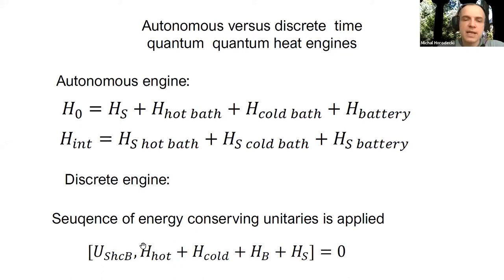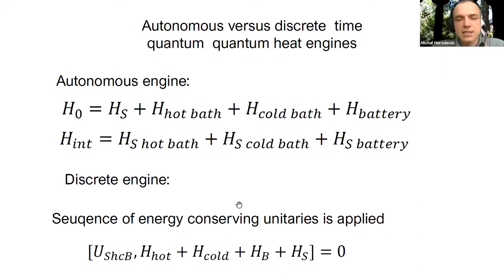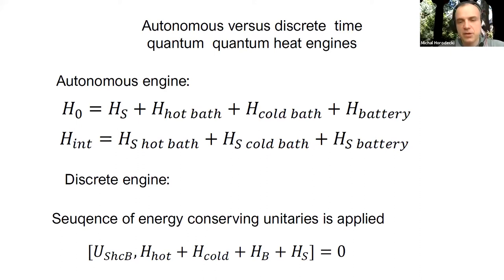In discrete engines, at each time step the Hamiltonian of all constituents is just the sum of the individual Hamiltonians—hot bath, cold bath, battery, and system—without any interaction. At discrete times we apply a unitary that commutes with this total Hamiltonian, which means it conserves total energy.